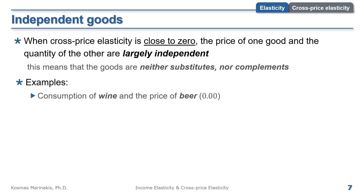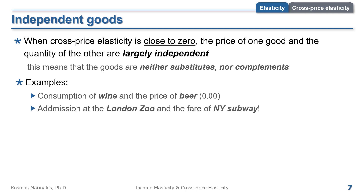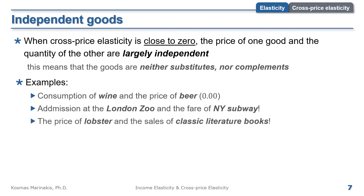For example, the consumption of wine and the price of beer have a cross-price elasticity of zero — so contrary to what most people believe, the two goods are not substitutes. Another example could be the entry fee at the London Zoo and the fare of the New York subway — I cannot come up with a good reason why those two services would be related. Finally, the price of lobster and sales of classic literature books must also be unrelated, as I never met a lobster that was more expensive because it was reading Tolstoy.